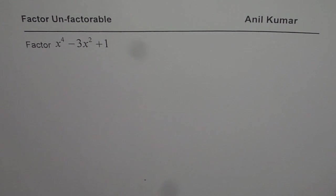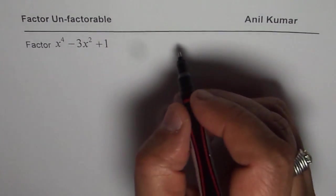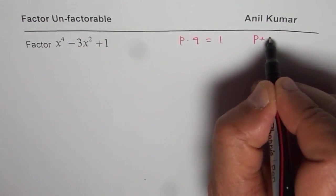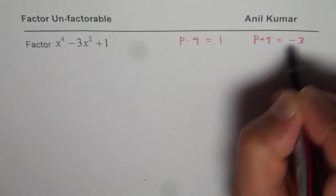We have a trinomial x^4 - 3x^2 + 1. You need to factor it. How will you do so? If we apply product and sum, that means p times q,